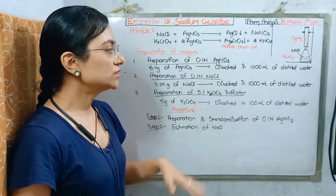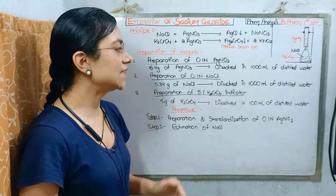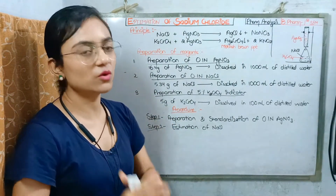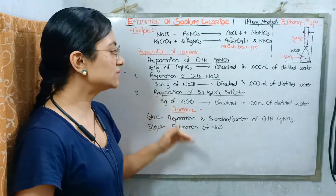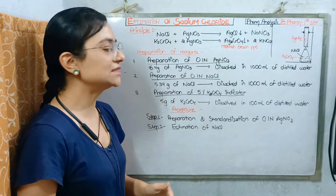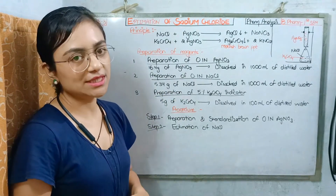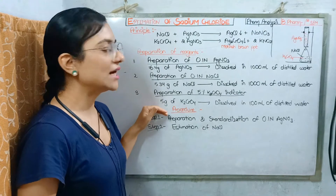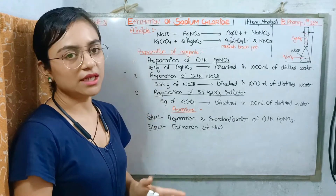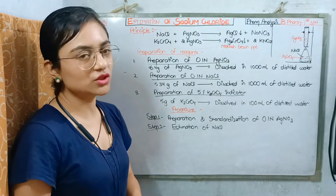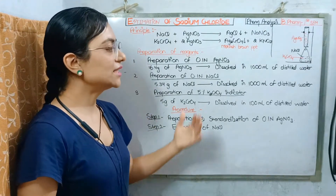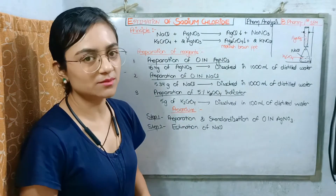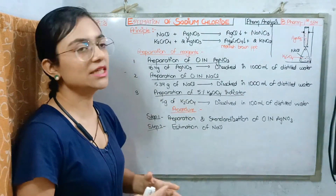After that, we will prepare the third reagent, which is the potassium chromate indicator. We will prepare a 5% potassium chromate solution by taking 5 grams of potassium chromate and dissolving it in 100 ml of distilled water. This completes our preparation of reagents.